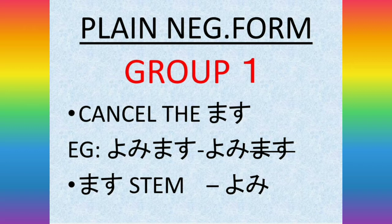So, what about the plain form? We have to look at the plain form conjugation. For example, Yomimasu. If we want to talk about the plain form, we need to look at the verb stem. Now we have two rules.